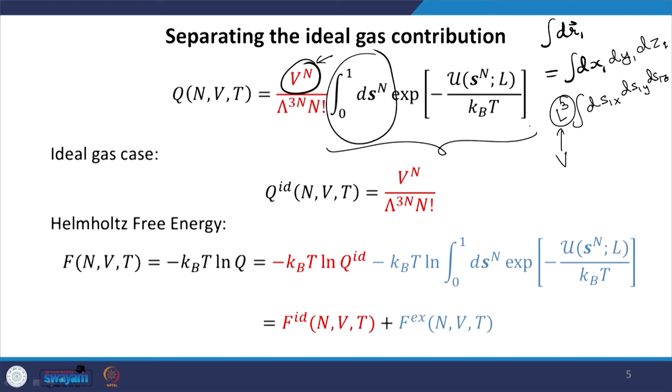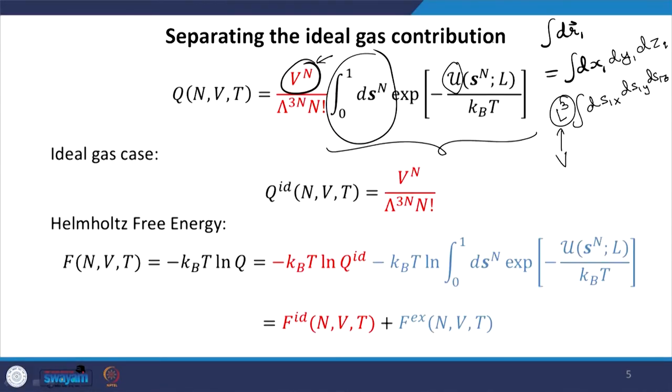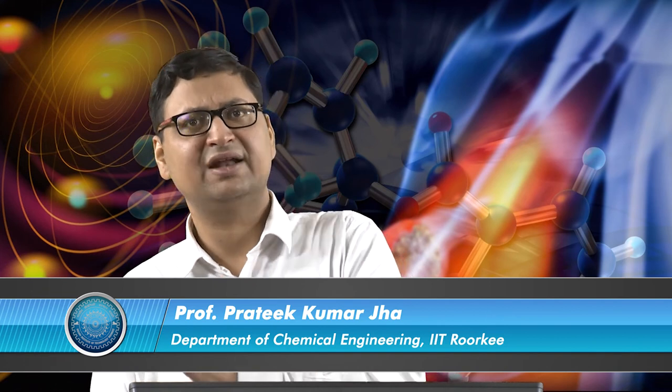What we then have is an integral from 0 to 1 in the scaled coordinates, but now the potential energy U clearly depends on the scaled coordinates and also on L, because if L is different we will have a different potential energy in the system. We have simply written it in a manner that the integral goes from 0 to 1, but that does not mean U has changed in representation — it is simply a way to make the coordinates dimensionless with no change otherwise in the result.